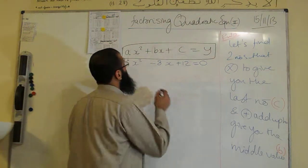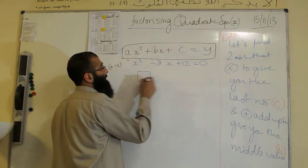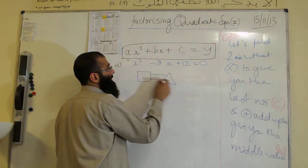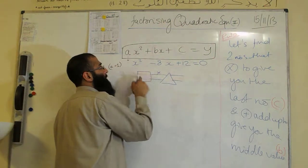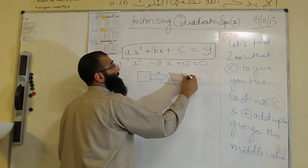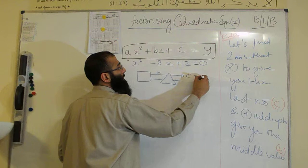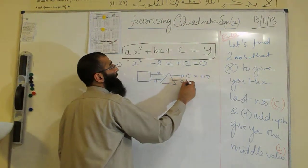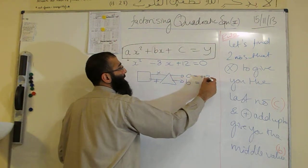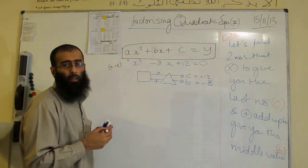We need to look at two numbers represented by these two shapes. The two numbers must multiply to give us the c value, which is 12, and they must add to give us the b value, which is minus 8, not 8.